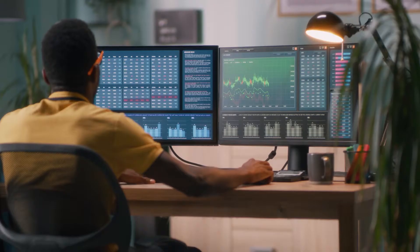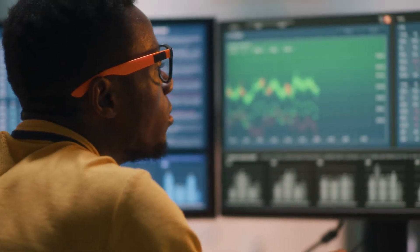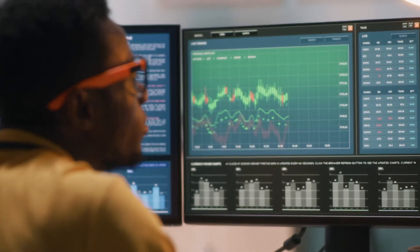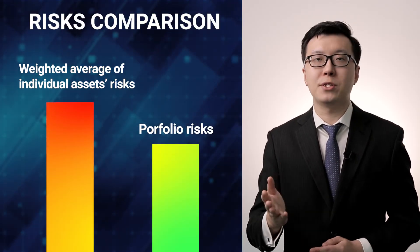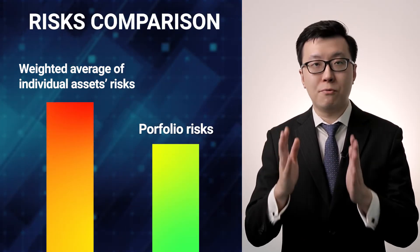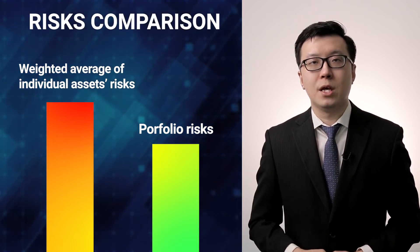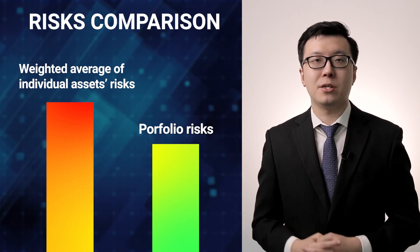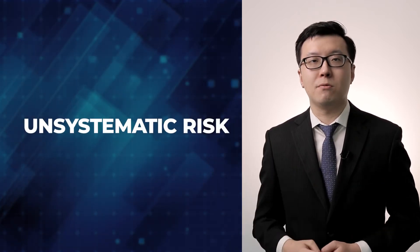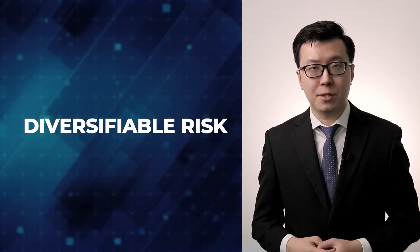Modern portfolio theory states that when an investor diversifies across assets that are less than perfectly correlated, the portfolio risk is less than the weighted average of the risks of the individual securities in the portfolio. The risk that is eliminated by diversification is called unsystematic risk, also known as diversifiable risk.